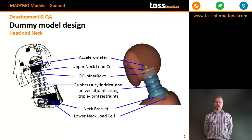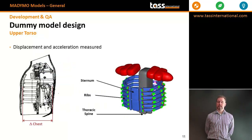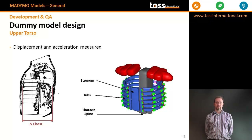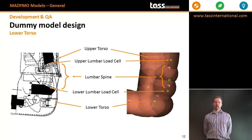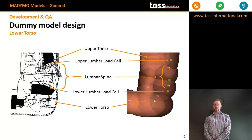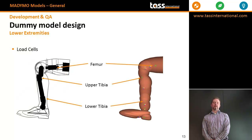At the base of the neck is the neck bracket, and the lower neck load cell is also modelled by requesting the joint constraint output. The thorax is a complex model designed explicitly with deformable ribs connected to a sternum, and the thoracic spine box is one single rigid body. The lower torso is designed with a lumbar spine that mimics the neck's triple joint model system, with load cells at the top and bottom, and the pelvis is a single rigid mass. In the lower limbs, the femurs and upper and lower tibias are modelled with rigid bodies, and load cells and knee displacement sensors are applied as appropriate.